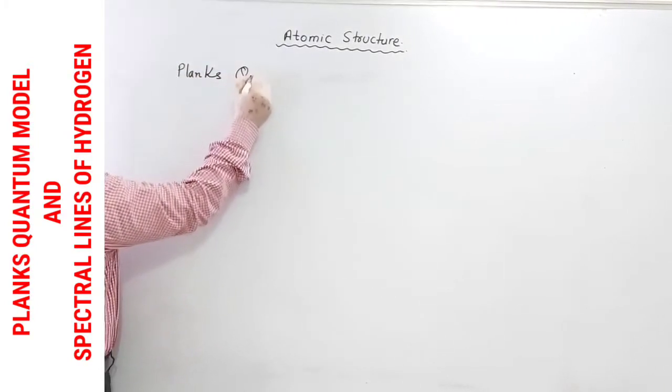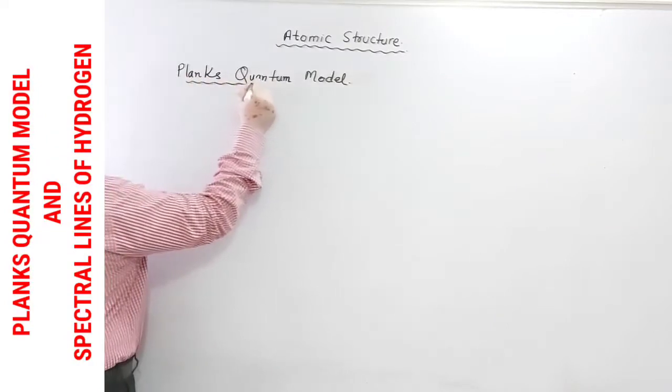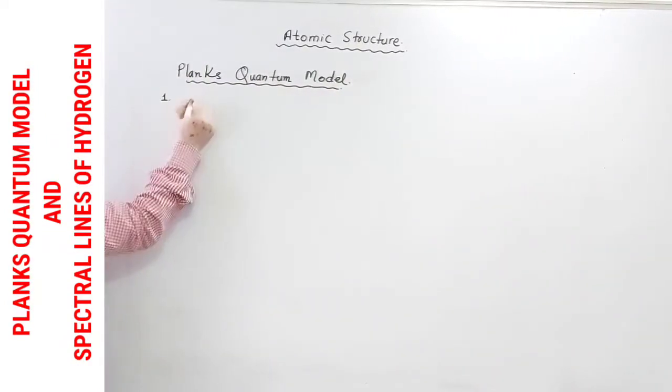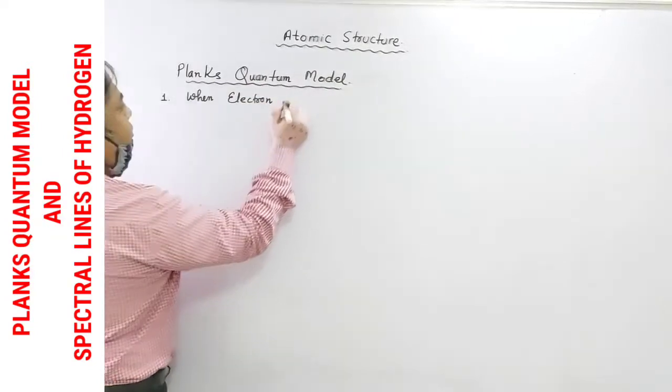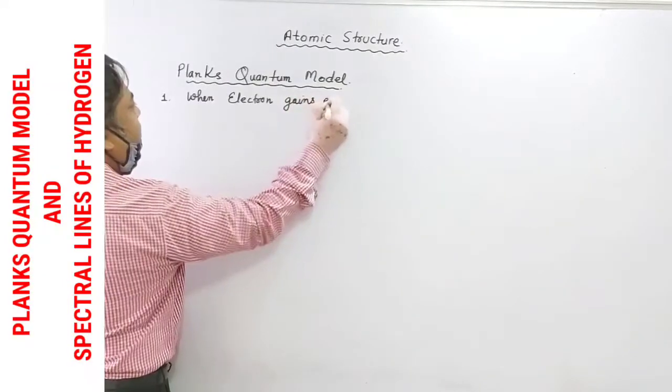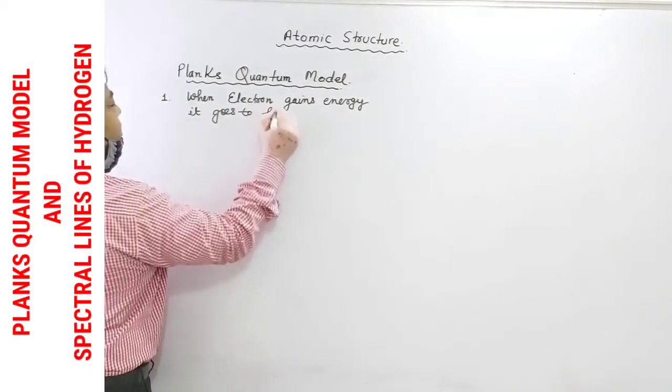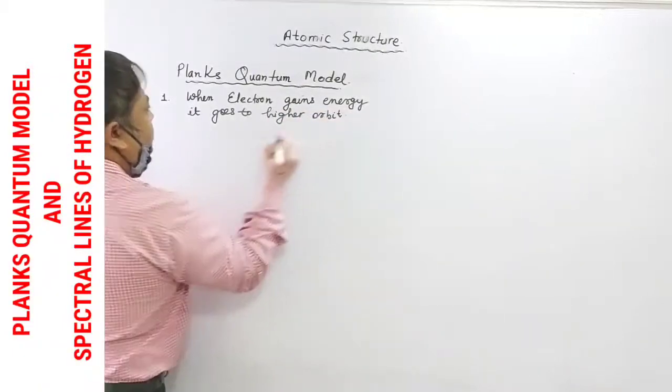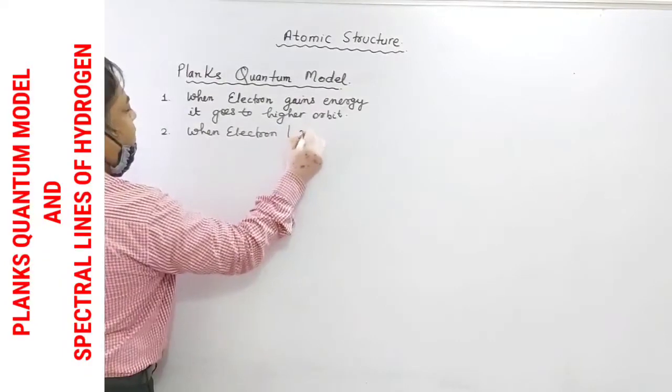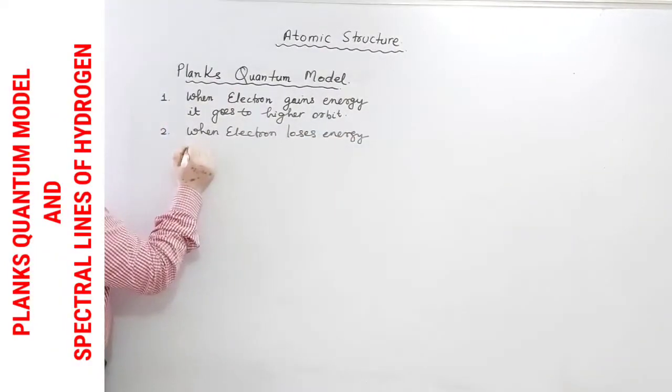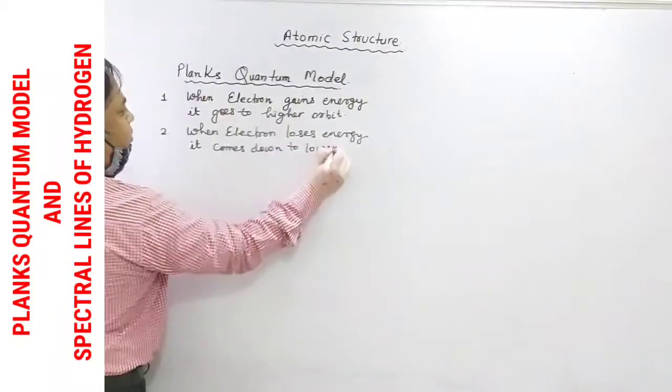Planck's quantum model. This is similar to that of Bohr's atomic theory and it says that when electron gains energy, it goes to higher orbit. Second, when electron loses energy, it comes down to lower orbit.